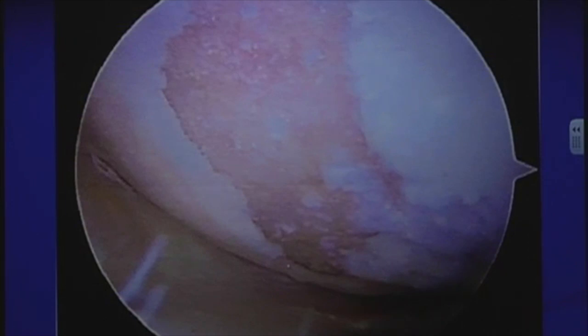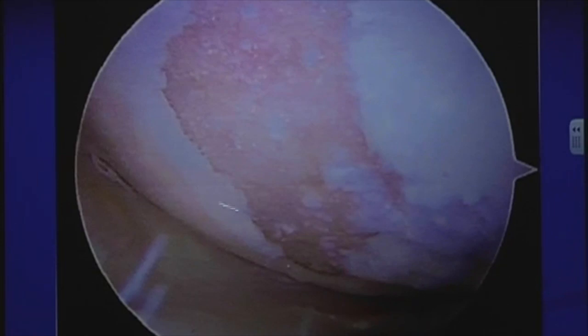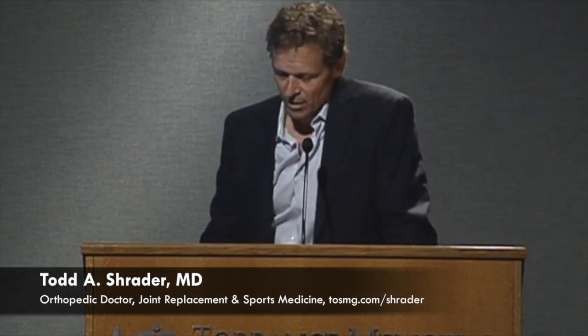This is an arthroscopic view of a knee — arthroscopy uses a small instrument about the size of a pencil to look inside the knee. We're looking at the medial femoral condyle, the thigh bone portion. The white area is cartilage and that's how it should look. But you see this large defect — a beige-pink area — that's exposed bone, and that is very painful arthritis.